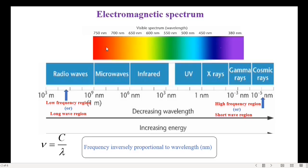The visible spectrum consists of colors with wavelengths from 700 nanometers to 400 nanometers, or in angstroms it is 7000 angstroms to 4000 angstroms. The wavelength of red color is 7000 angstroms, wavelength of violet is 4000 angstroms, and the other colors from orange to blue have wavelengths between 7000 and 4000 angstroms.